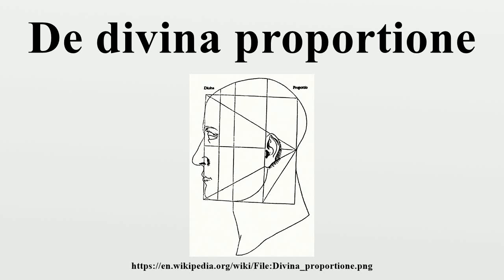The Divina Proportione is a book on mathematics written by Luca Pacioli and illustrated by Leonardo da Vinci, composed around 1498 in Milan and first printed in 1509. Its subject was mathematical proportions and their applications to geometry, visual art through perspective, and architecture. The clarity of the written material and Leonardo's excellent diagrams helped the book achieve an impact beyond mathematical circles, popularizing contemporary geometric concepts and images.